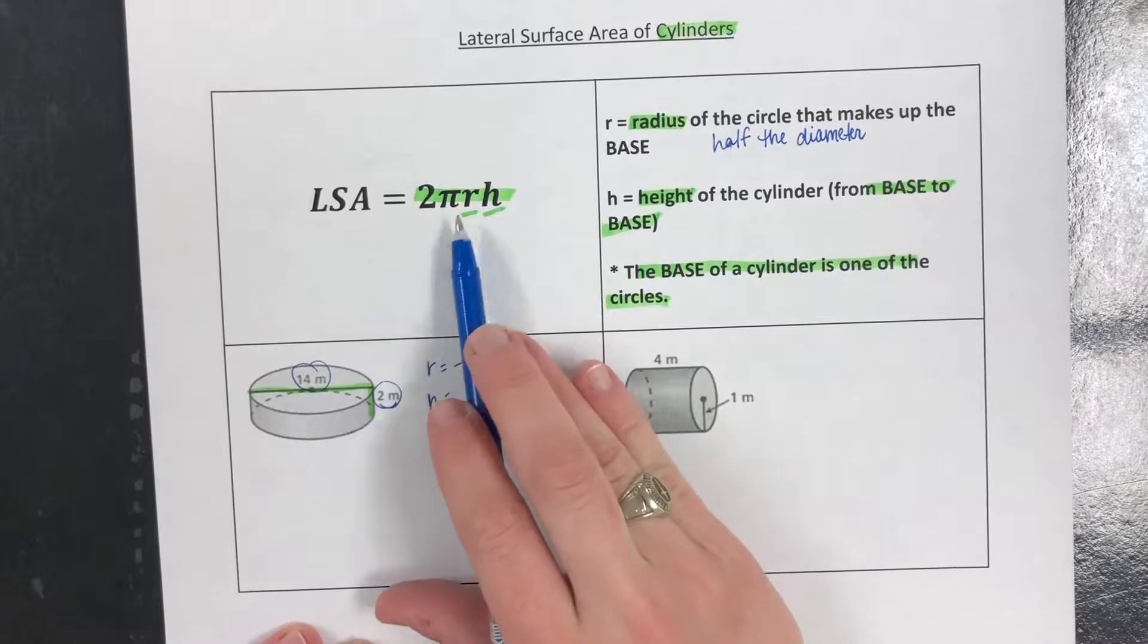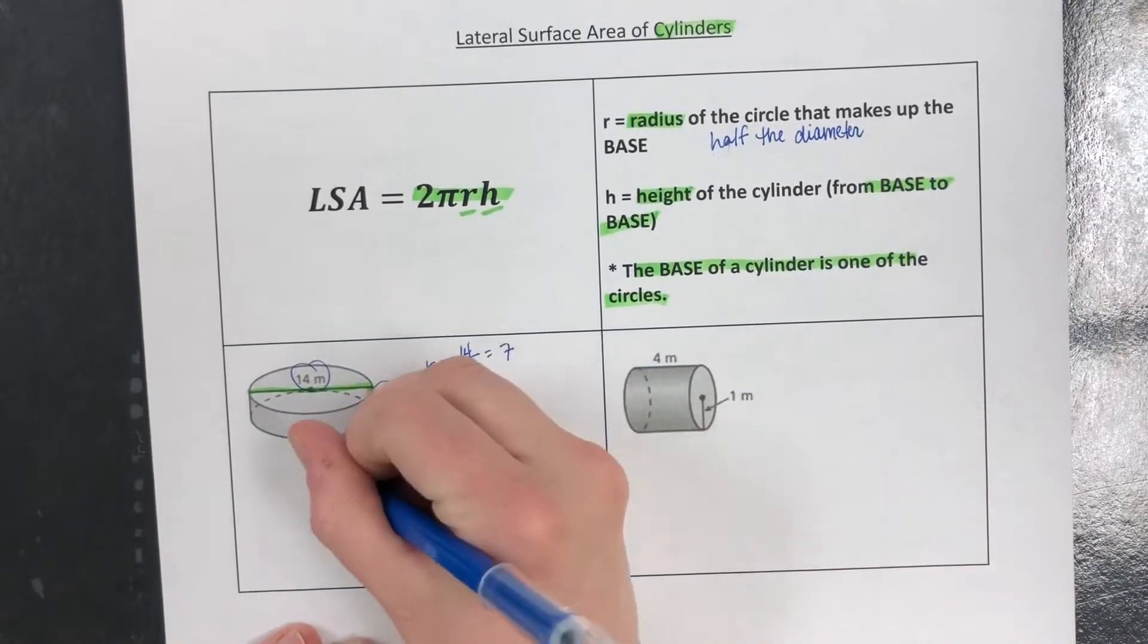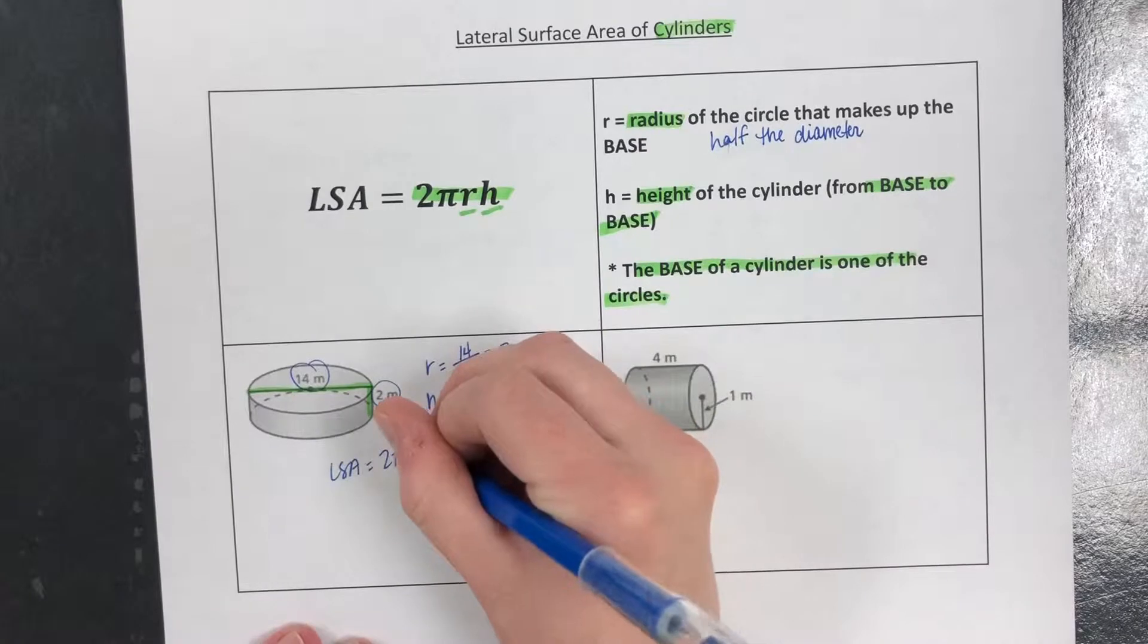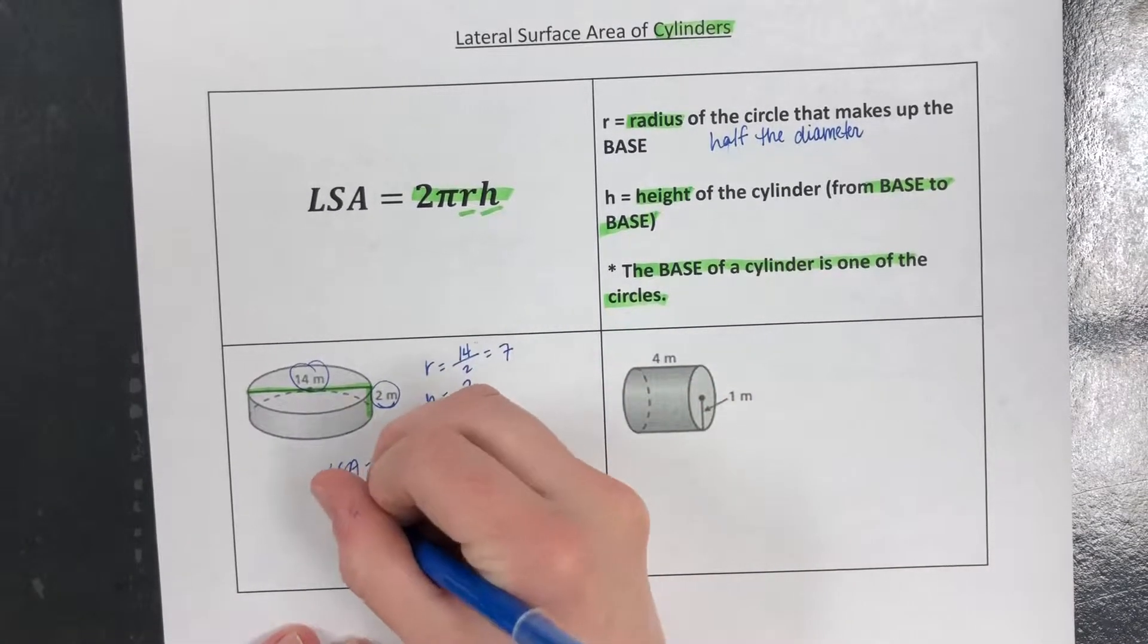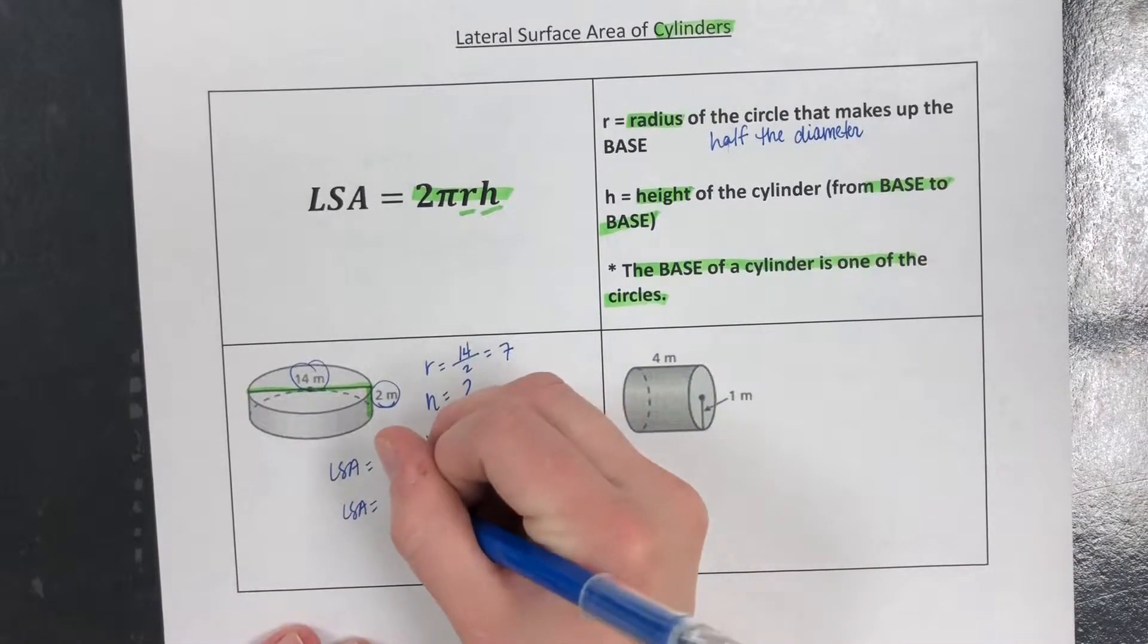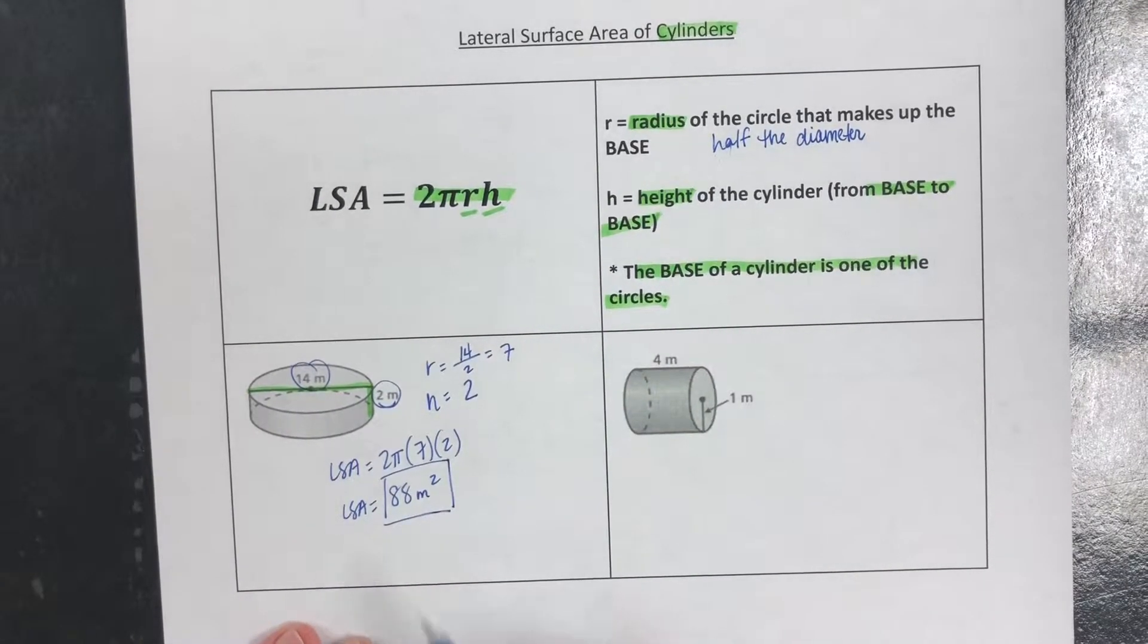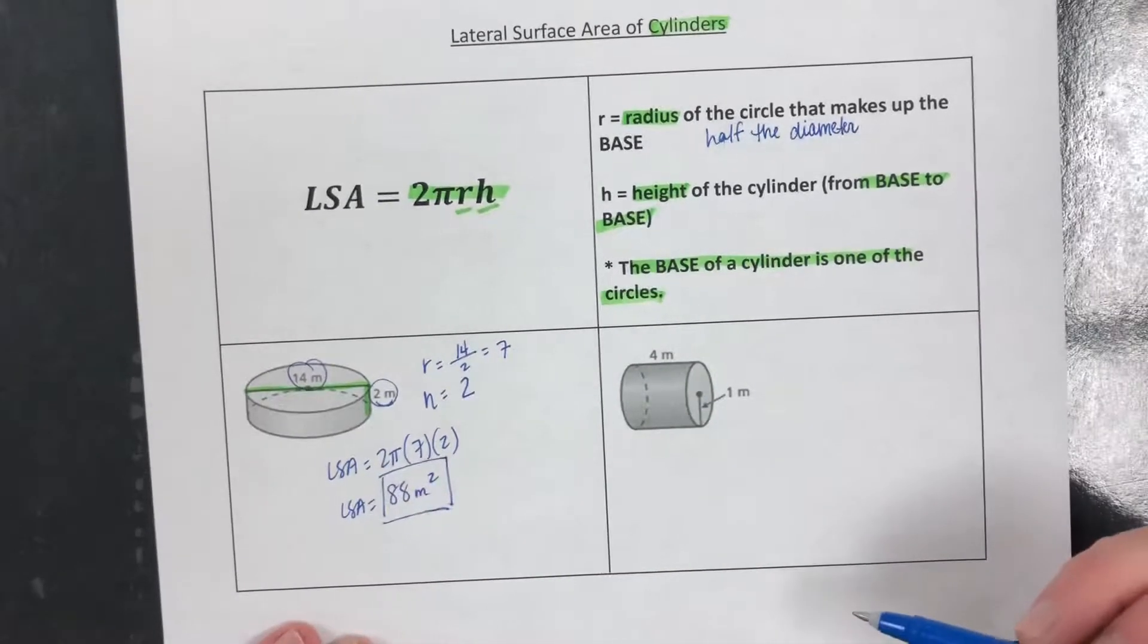So we have our two pieces. Now we just plug them into our formula 2πrh, so the lateral surface area equals 2π times the radius which is 7 times the height which is 2. Type it all into your calculator and you get 88 meters squared for the lateral surface area. So that's only the rectangle that connects the two circles on the cylinder.